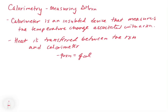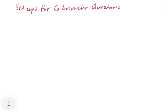If the reaction is exothermic, we'll see a rise in the temperature of the calorimeter. If it's endothermic, we'll see a decrease in the temperature of the calorimeter. When it's exothermic, the reaction gives off energy, so that makes the temperature of the calorimeter go up. When it's endothermic, the reaction absorbs energy, so that makes the temperature of the calorimeter go down.